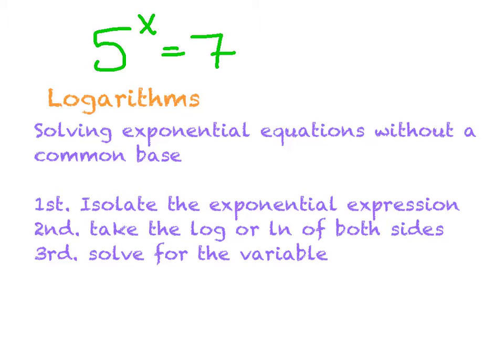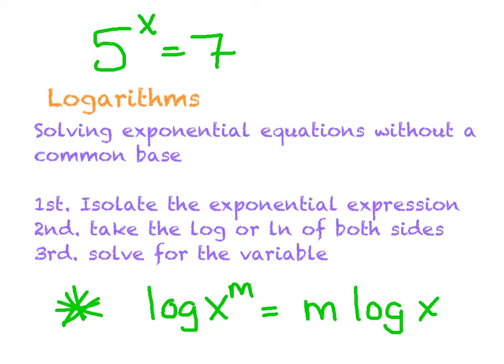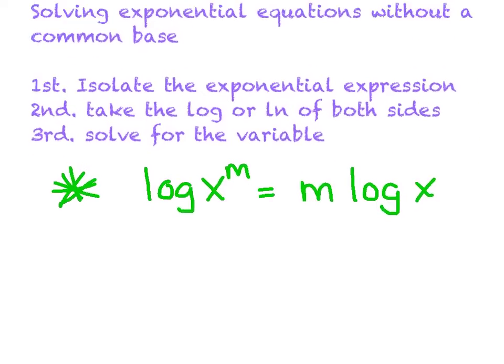And the third and final step is just to solve for the variable. You might have to add, subtract, multiply, whatever, to get the variable by itself. Now, we do want to make sure we use one of our log properties. The most important property is log three: the log of x to the m is equal to m log x. That property said you are fair to take that exponent and bring it down in front.